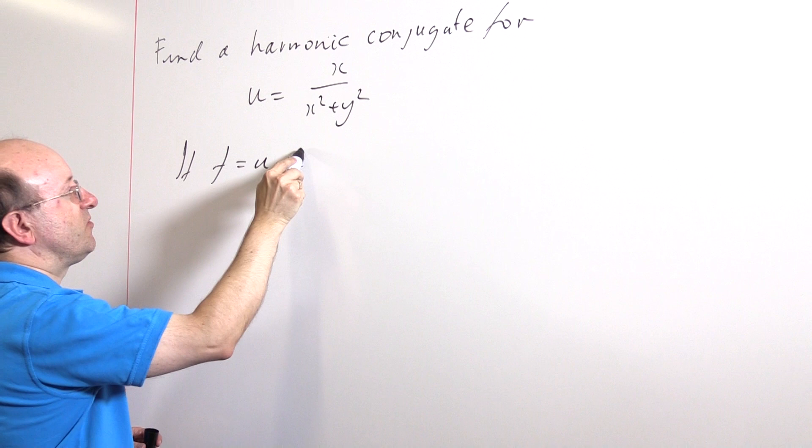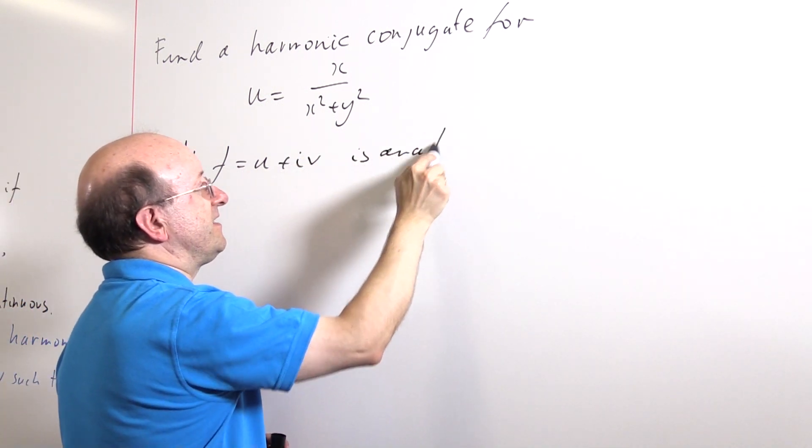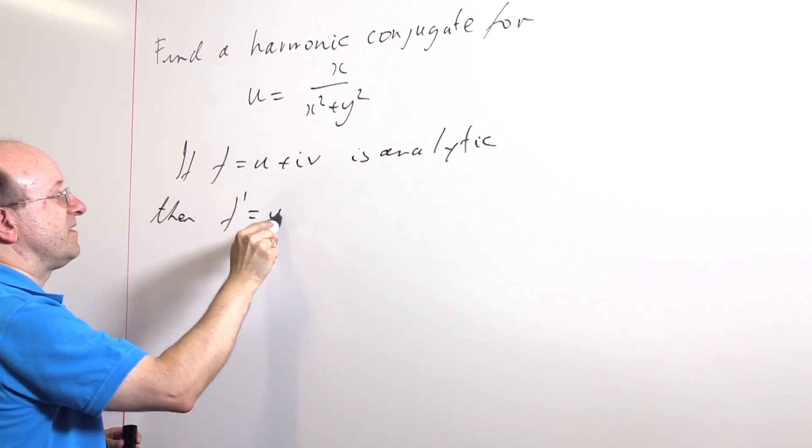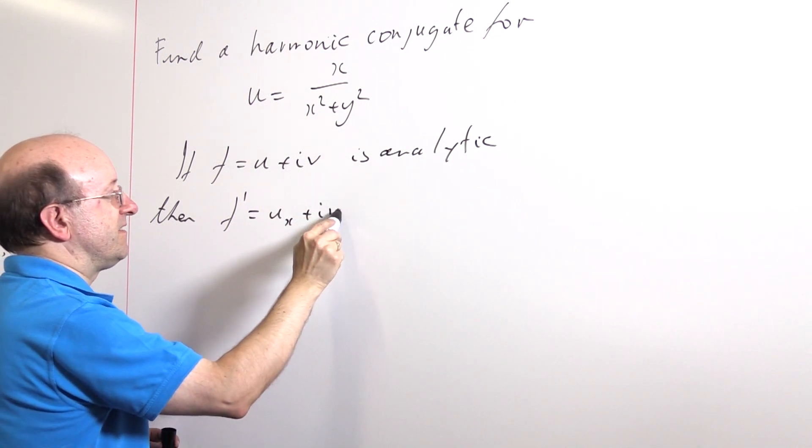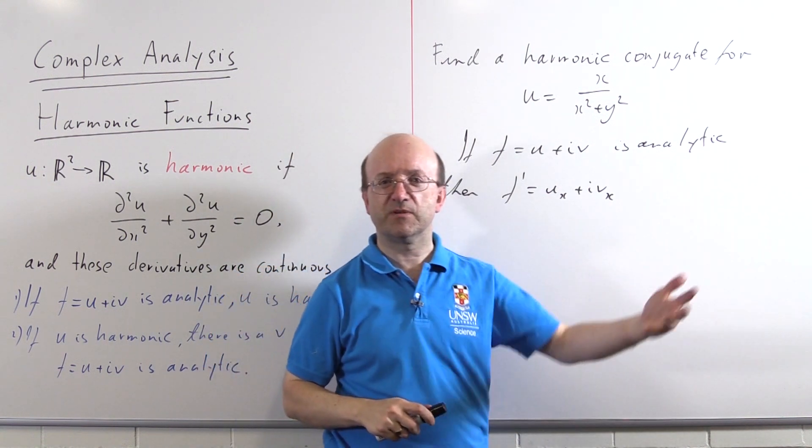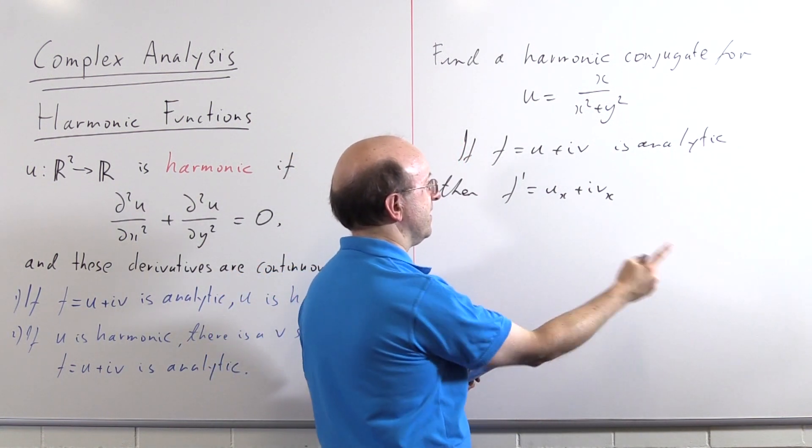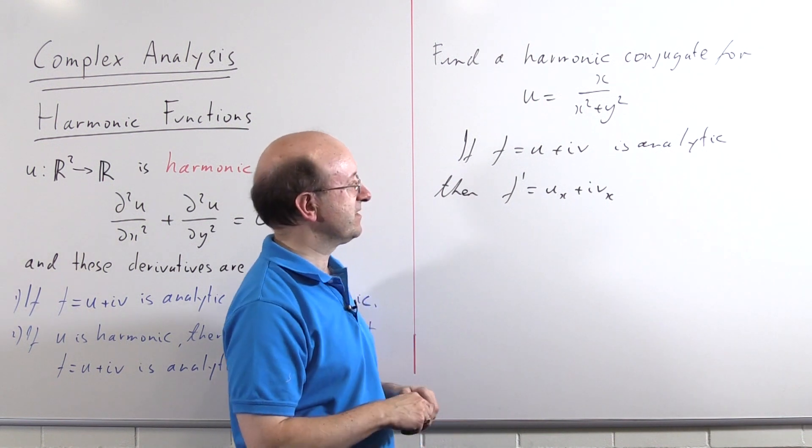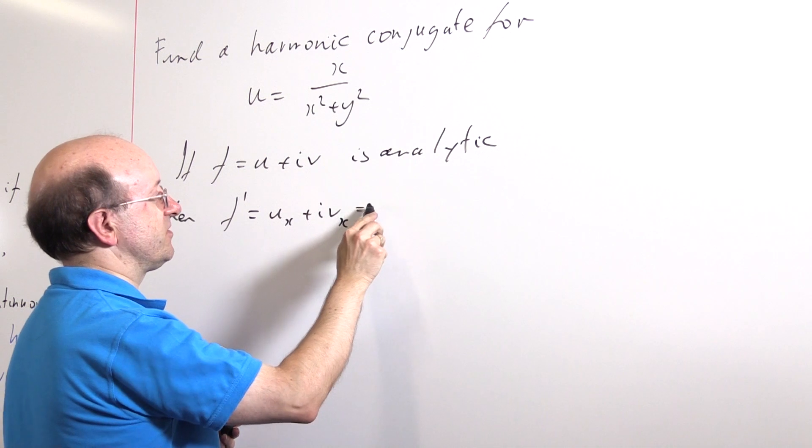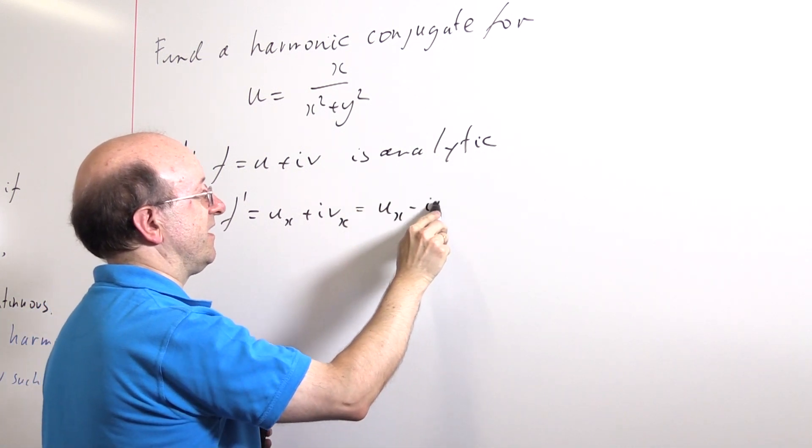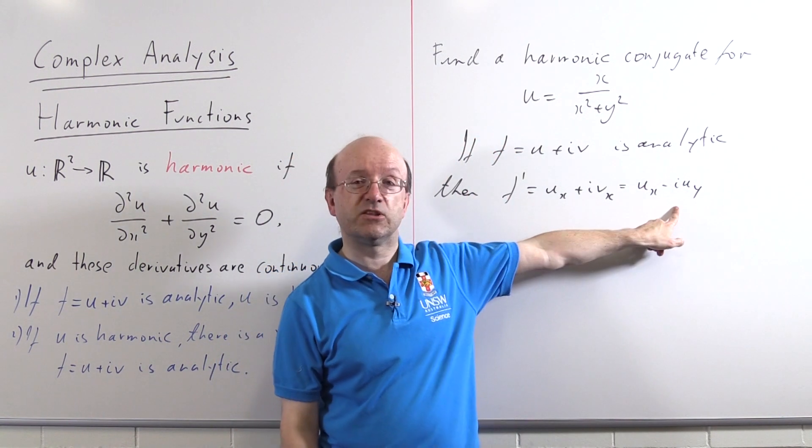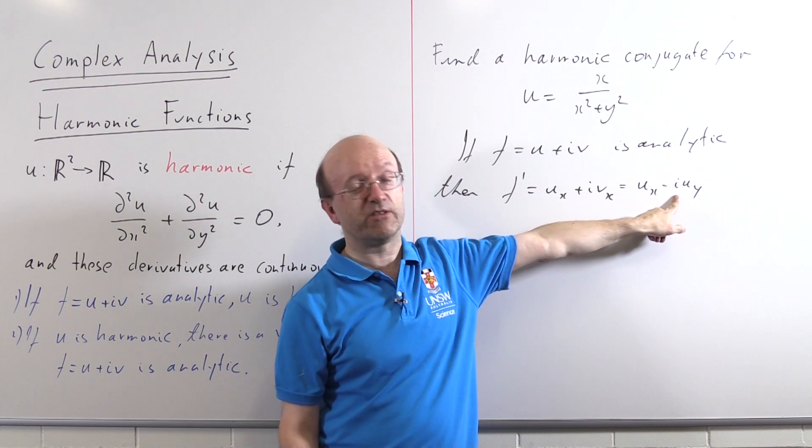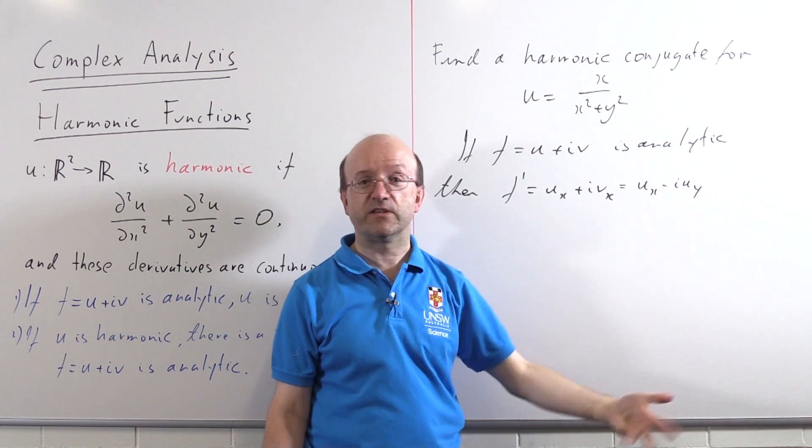If f = u + iv and is analytic, then its derivative f' = u_x + iv_x is also analytic. The Cauchy-Riemann equations tell us we can replace v_x with -u_y. So this is the same as u_x - iu_y. And we can calculate this thing just knowing u. And then we could use analytic continuation to write u_x - iu_y, in other words f', as a function of z and integrate the resulting thing with respect to z alone.